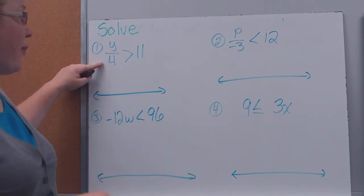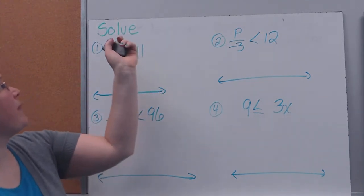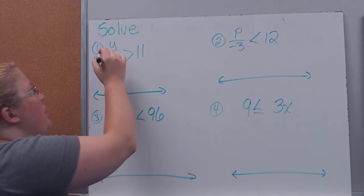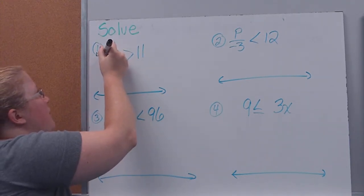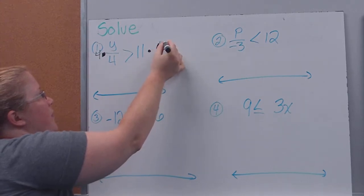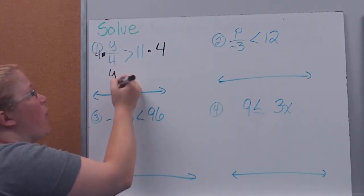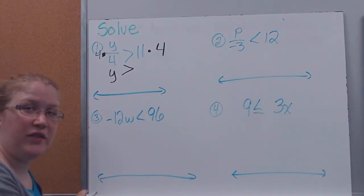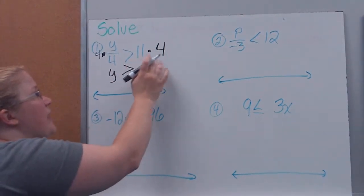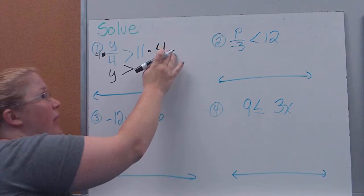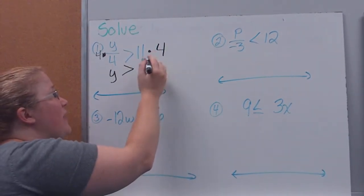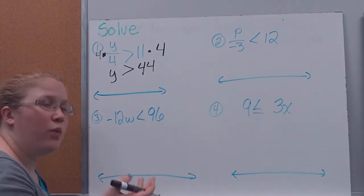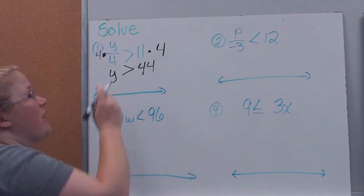For example, here I have a positive 4 that I'm dividing by: y divided by 4 is greater than 11. To undo the division, I'll multiply both sides by 4. My 4s cancel, leaving y. I multiplied by a positive number, so I'm not changing the sign — it stays greater than. Since I multiplied one side by 4, I multiply the other side too: 11 times 4 gives me 44. So y is greater than 44.